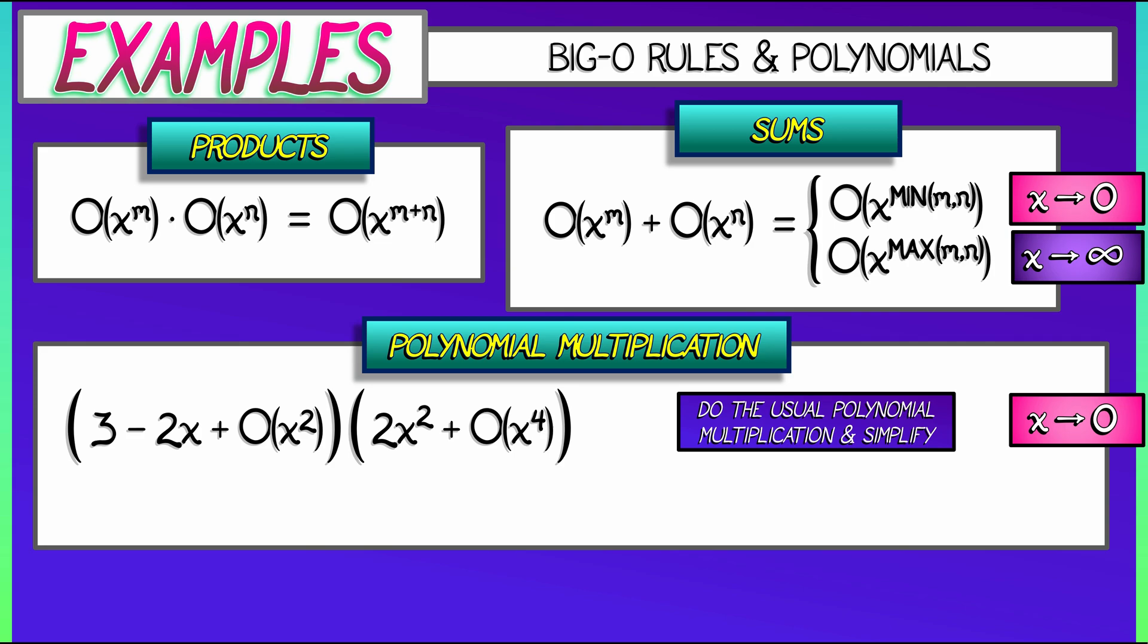So I'm going to just distribute this multiplication. Take the first term on the left, 3, multiply it by 2x squared, I get 6x squared. But then, 3 times Big-O of x to the fourth is Big-O of x to the fourth. The next term, negative 2x times 2x squared, that's minus 4x cubed. Negative 2x times Big-O of x to the fourth is Big-O of x to the fifth.